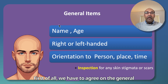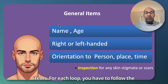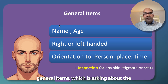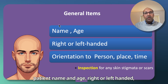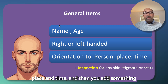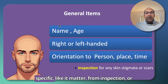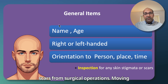First of all, we have to agree on the general items. For each loop, you have to follow the general items, which includes asking about the patient's name and age, whether they are right or left-handed, and asking about orientation to person, place, and time. Then you add something specific, like a relevant matter from inspection or scars from surgical operations.